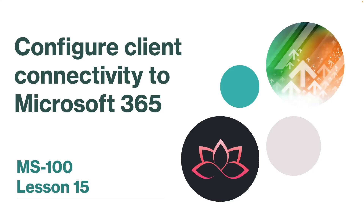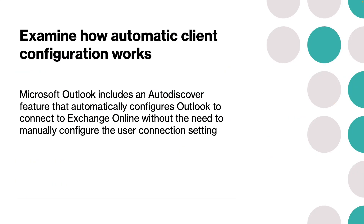In this lesson, we are going to learn about configuring client connectivity to Microsoft 365. Microsoft Outlook includes an auto-discover feature that automatically configures Outlook to connect to Exchange Online without the need to manually configure user connection settings. Depending on their configuration, Outlook users receive their required connection settings from either Exchange Online or Exchange Server On-Prem the first time they sign in with their email address and password.